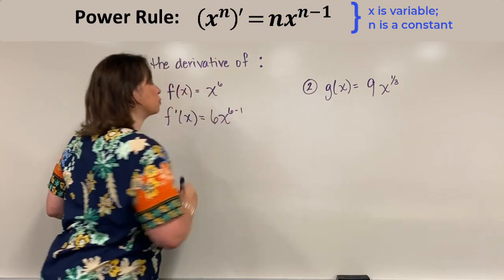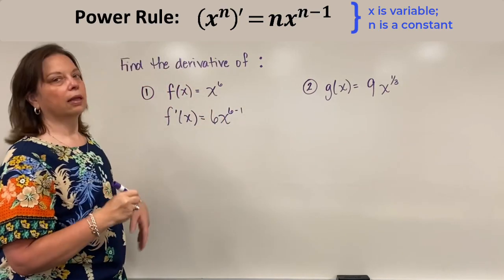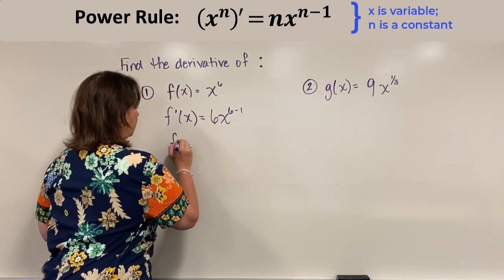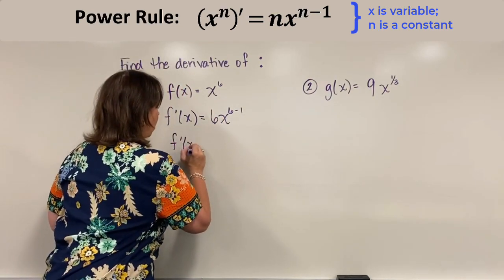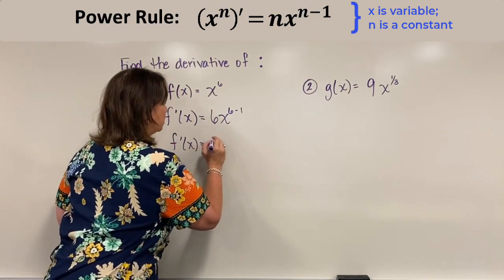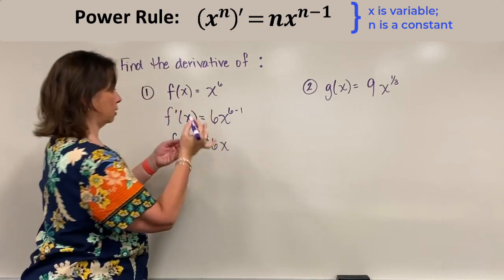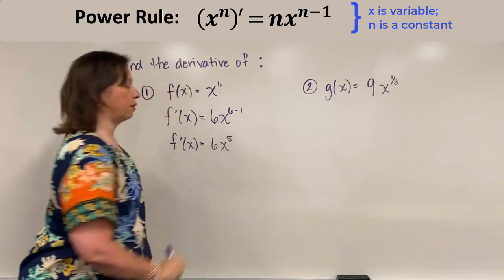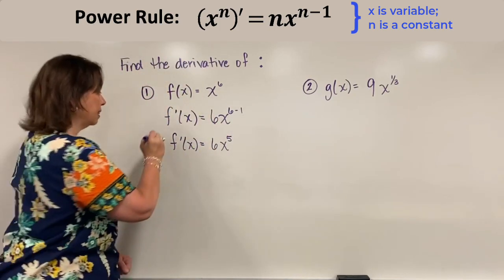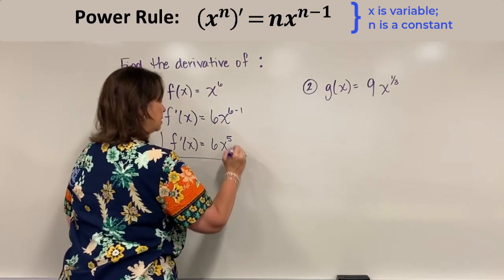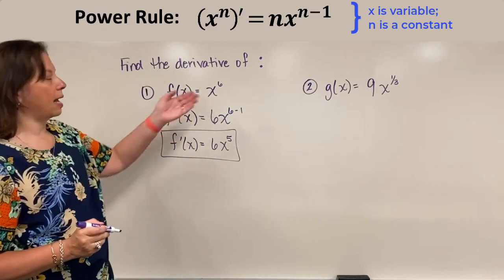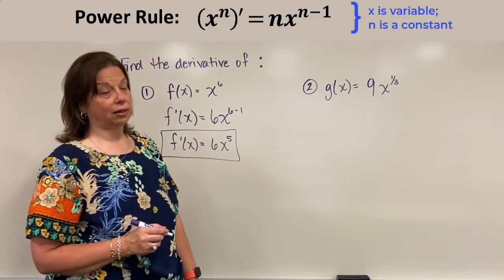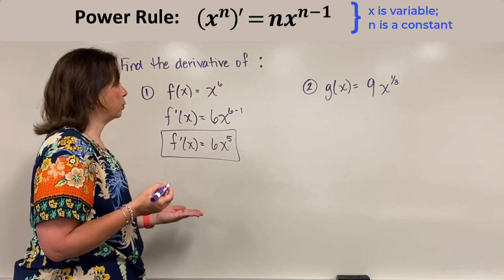and now I have 6x, and I would subtract 1 from the power. So I have 6 minus 1, thus I have a new power. I'm going to write this below: f prime of x is equal to 6x to the new power, which is 5. And this is now the derivative of x to the sixth, using the power rule.